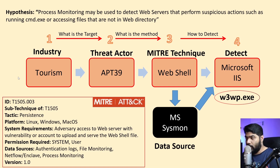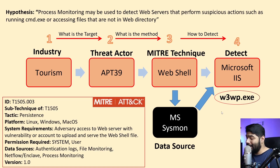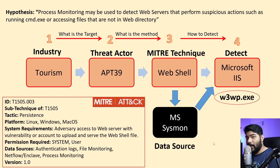How can you identify whether your threat hunt scenario relates to APT 39? MITRE says that process monitoring can give us a real good hint. There is a well-known process called w3wp.exe which is the parent process of Microsoft IIS. If we see w3wp.exe spawning other suspicious processes that are behaving anomalously, that is a hit for us and proves our hypothesis that APT 39 is inside our network.